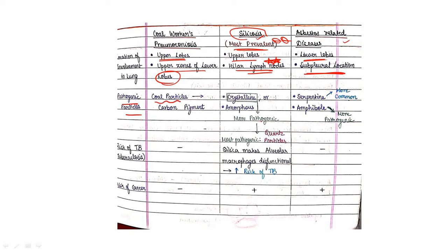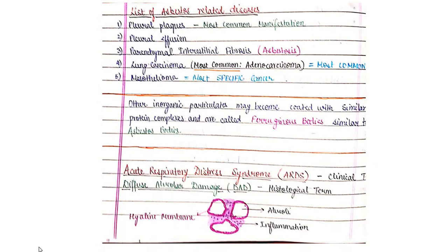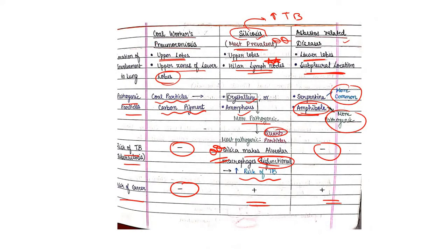Regarding pathogenic particles: coal workers' pneumoconiosis involves coal particles and carbon pigments. Silicosis involves crystalline or amorphous forms of silica — crystalline is more pathogenic. Asbestos has two forms: serpentine and amphibole. Serpentine is more common but amphibole is more pathogenic. Regarding TB risk: no increased risk in coal workers' pneumoconiosis, but silica impairs alveolar macrophage function, increasing the risk of TB — this is a very important MCQ point. Cancer risk is absent in coal workers' pneumoconiosis but present in silicosis and asbestos-related disease.